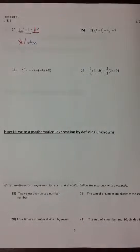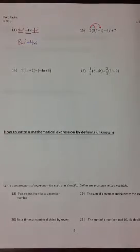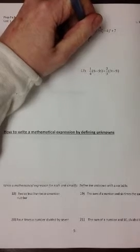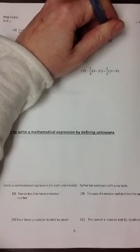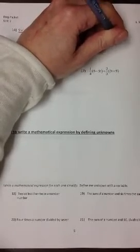To combine like terms in a problem that has parentheses, we need to use the distributive property first, distributing the 2 onto the 8f and onto the negative 1. So this problem is going to become 16f minus 2 minus 4f plus 7.